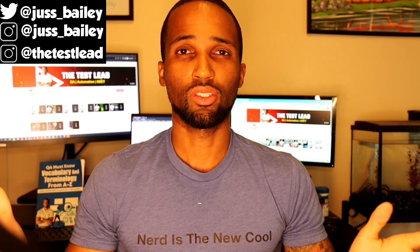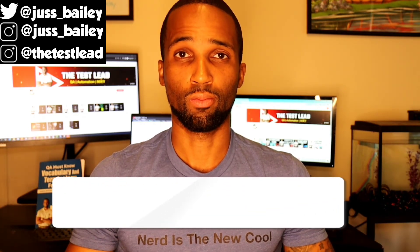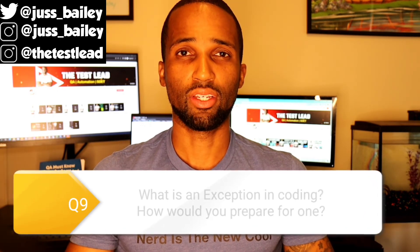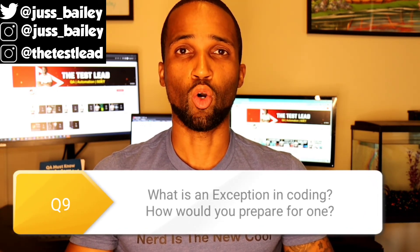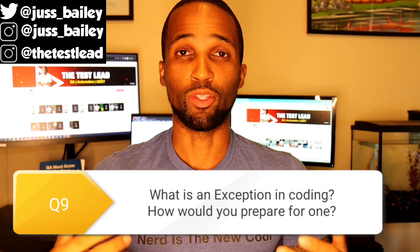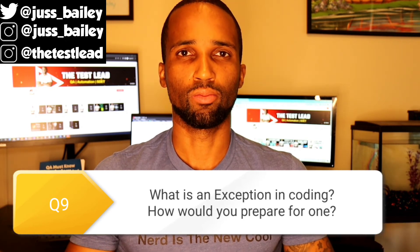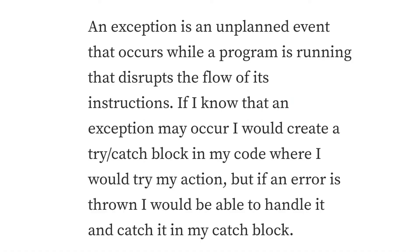These last two questions are more about coding. Question nine: what is an exception in coding, and if you know an exception might be thrown, how would you handle it? An exception is an unplanned event that occurs while your program is running that disrupts the flow of its instructions. If I know an exception may occur, I would create a try-catch block in my code — I would try my action and handle any error in the catch block.